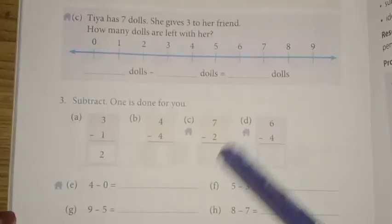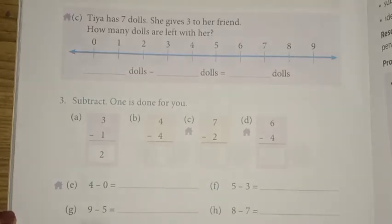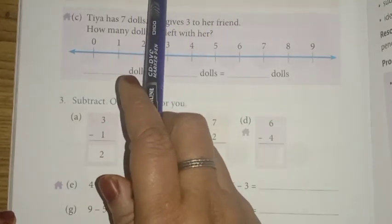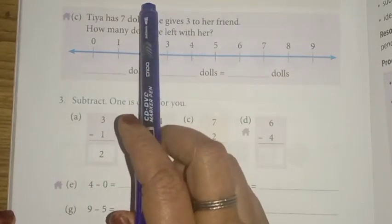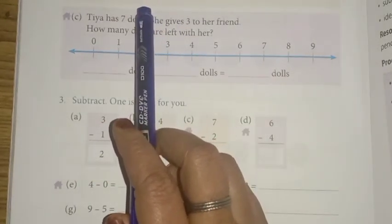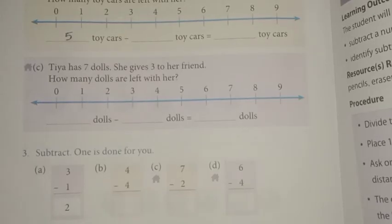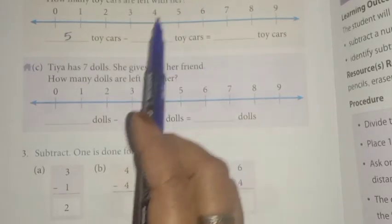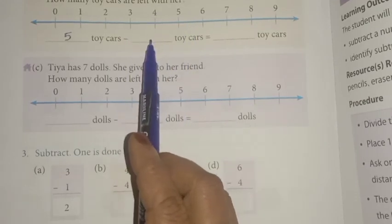Tia has five toy cars; she breaks two cars while playing. How many toy cars are left with her? Tia has five cars, so write five. She breaks two cars, so write two.